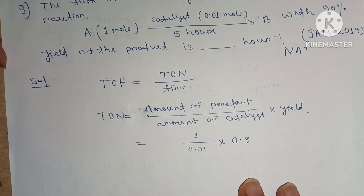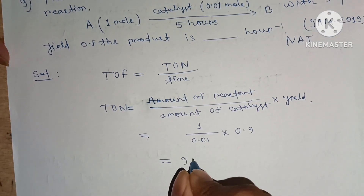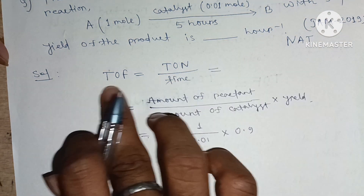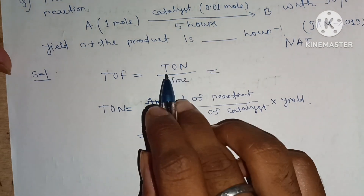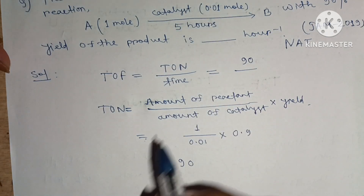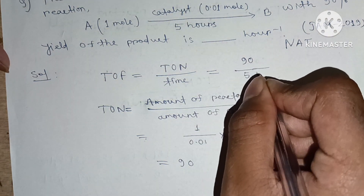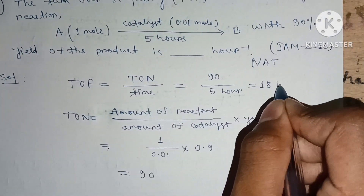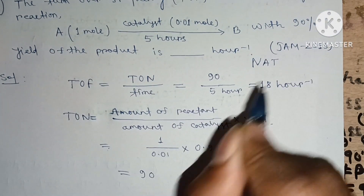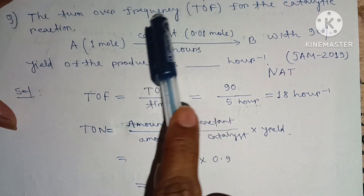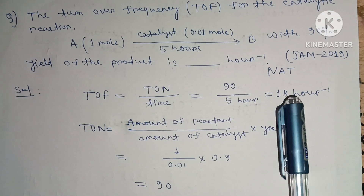Now we can calculate the turnover frequency. The turnover number is 90 and the time is 5 hours. So turnover frequency equals 90 divided by 5, which equals 18 per hour (hr⁻¹). This means the catalyst can perform 18 cycles per hour.